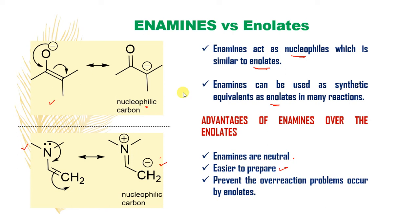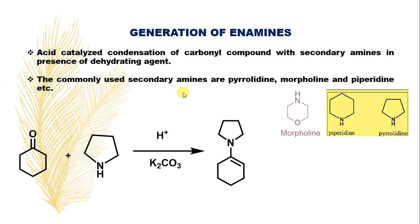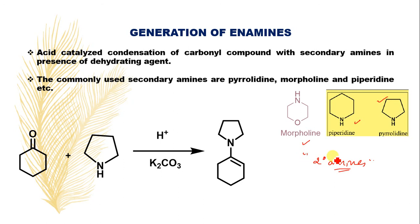After understanding the advantages of enamines over enolates, let us discuss about the generation of enamines — that means, how to generate these enamines. The process is simple: acid-catalyzed condensation of carbonyl compounds with secondary amines, especially in the presence of a dehydrating agent such as potassium carbonate, generally produces an enamine, which is an alpha-beta-unsaturated amine. The commonly used secondary amines are pyrrolidine, morpholine, and piperidine. You have to prefer secondary amines for the formation of enamines.